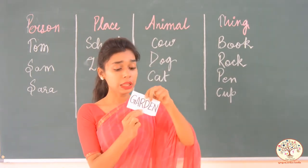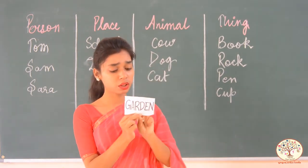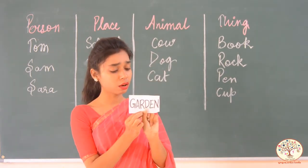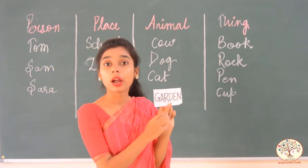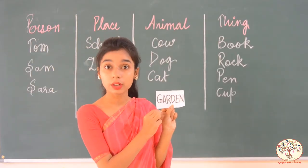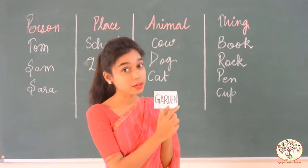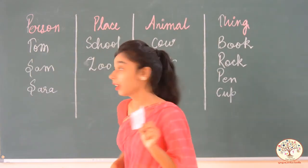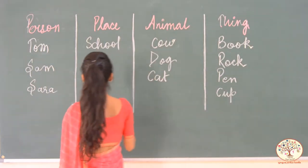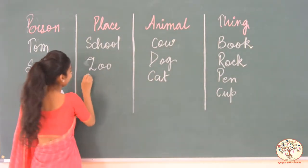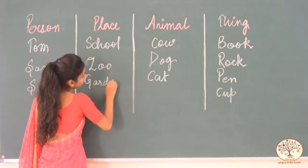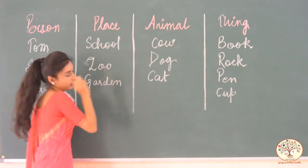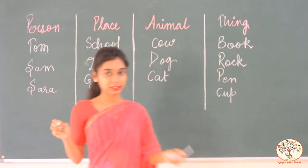Please help me out with this spelling — it is so long. Garden. Garden is a name of a... Place. Yes!